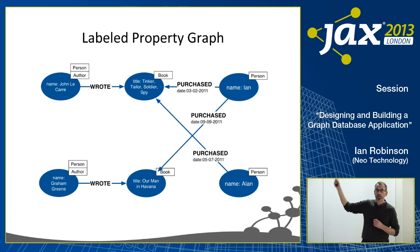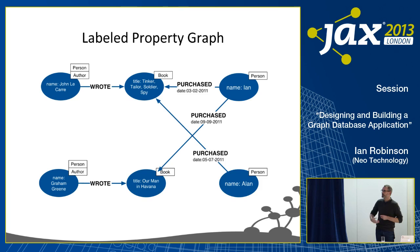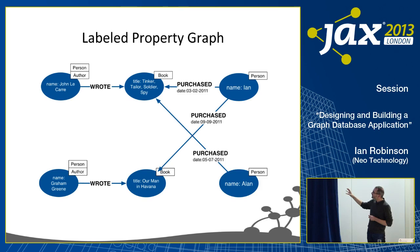The actual graph model that Neo4j employs is called the labeled property graph model. There are a number of different ways of modeling graphs — for example, triple stores like RDF represent one particular model. Neo4j uses something slightly different comprising four things: nodes, relationships, properties, and labels.